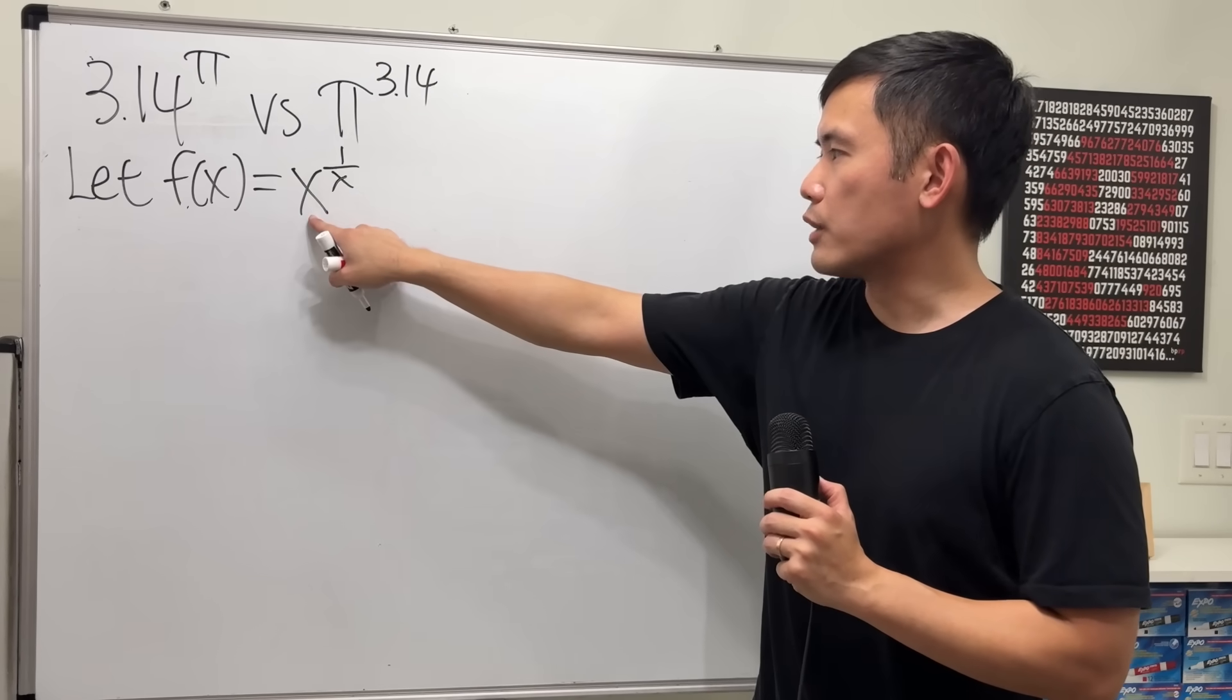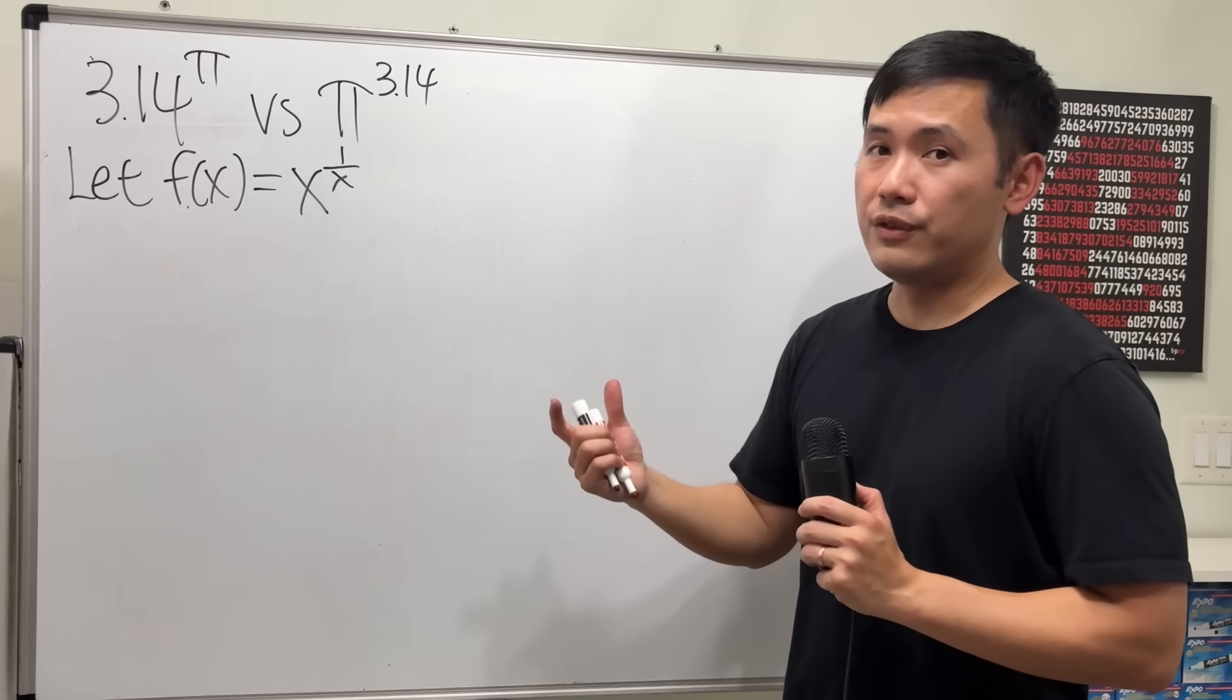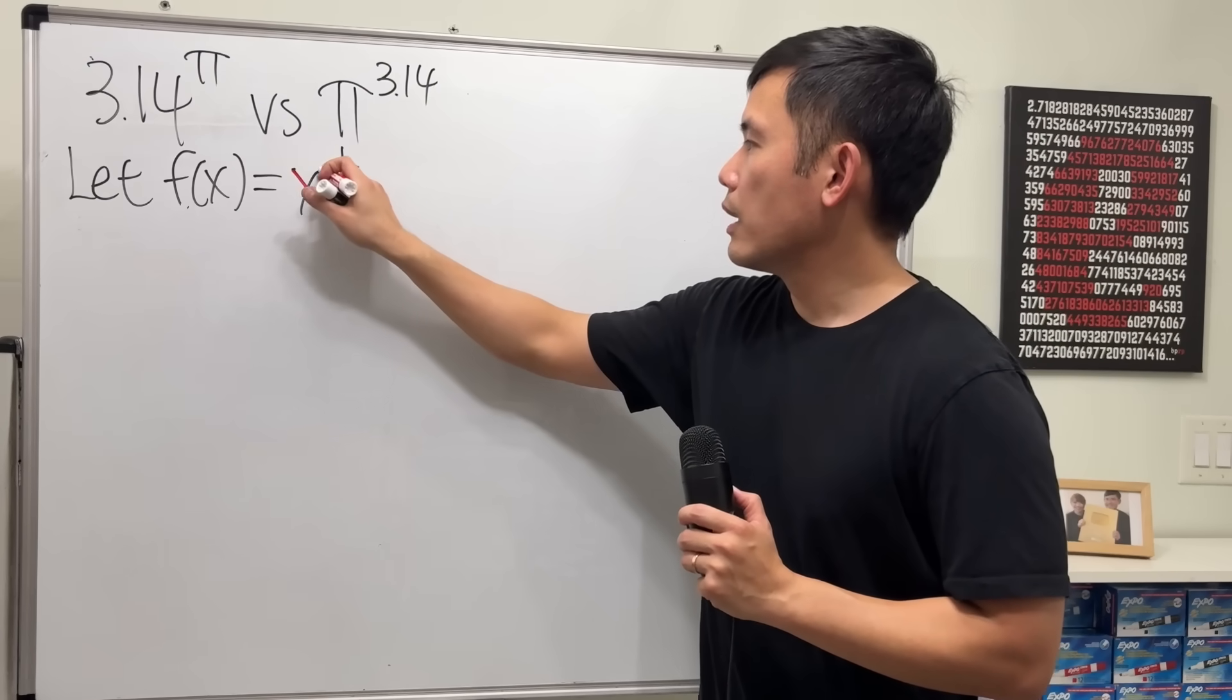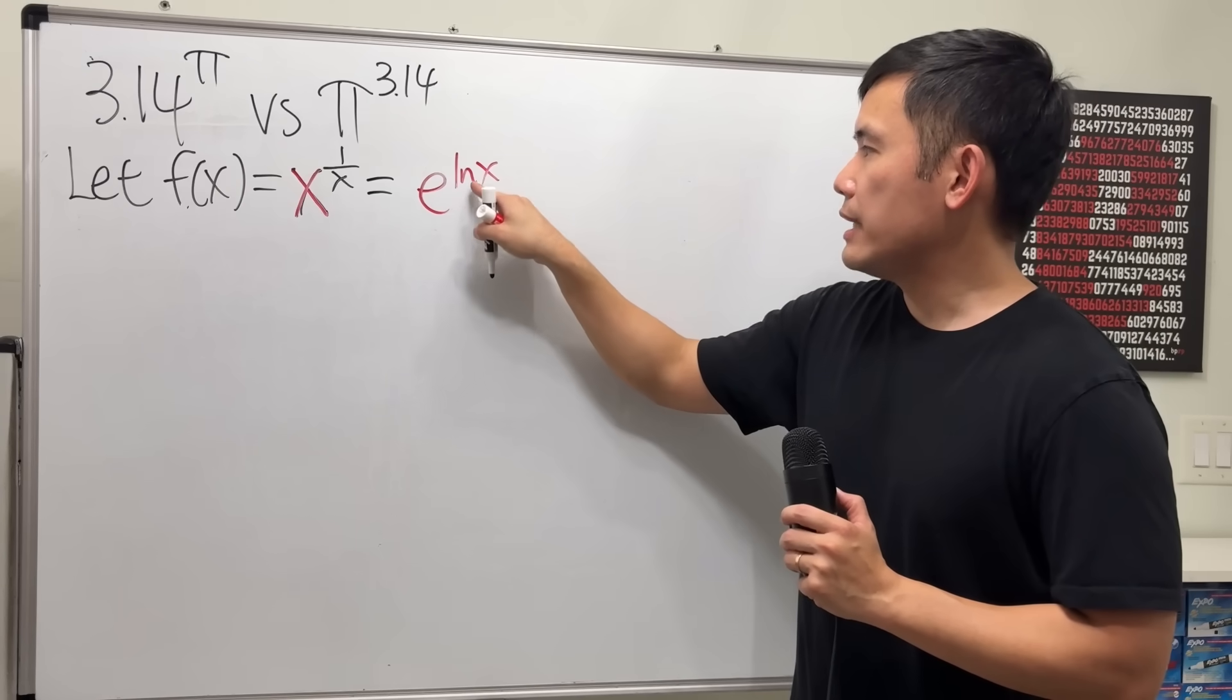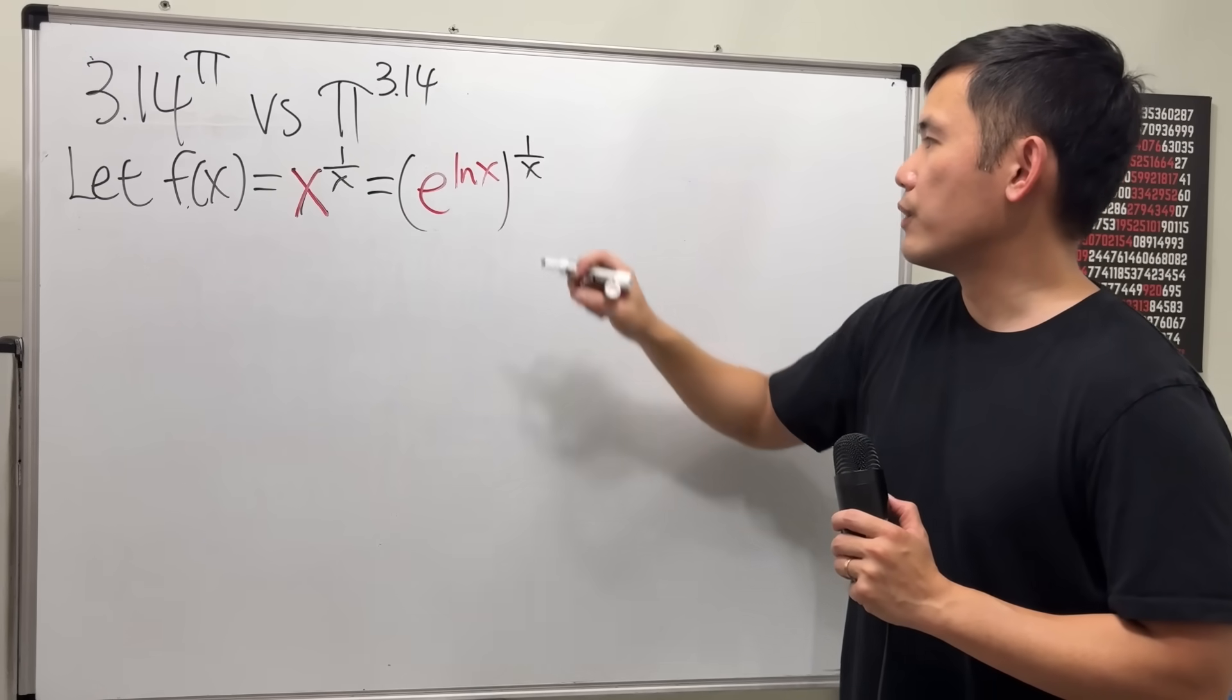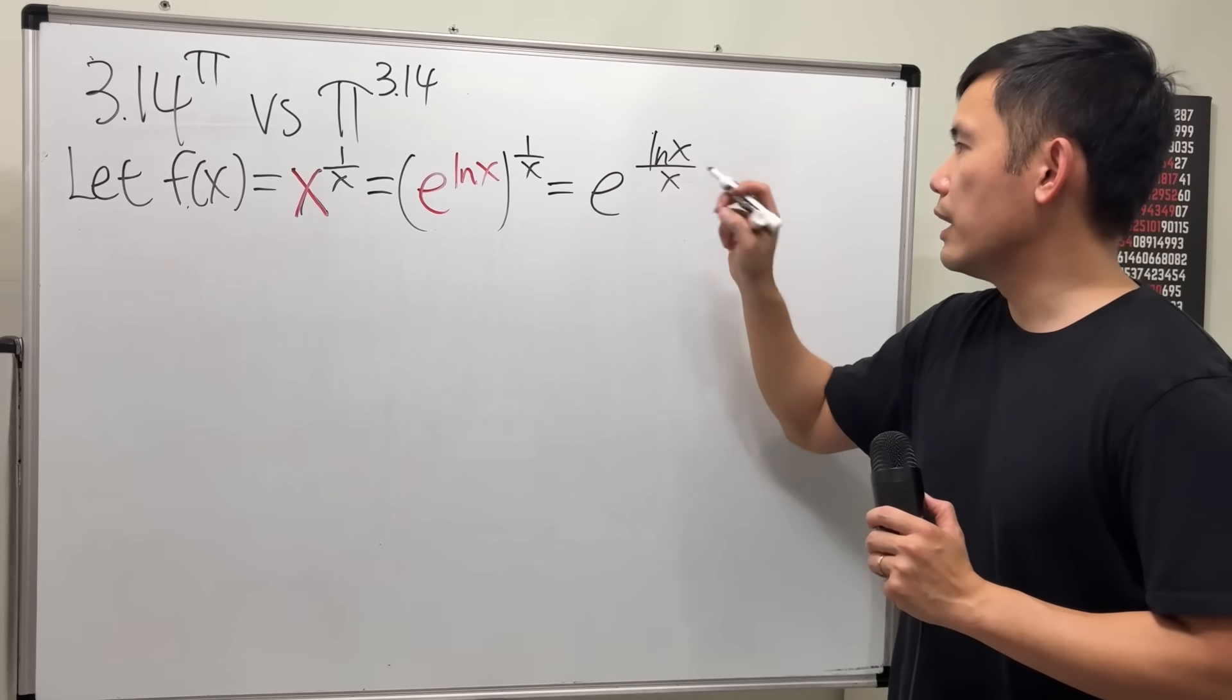But here we have a function to a function power. And especially, we do not like to differentiate when the base is a variable. We like to differentiate when the base is e. Therefore, I'm going to rewrite the x as e to the ln x power. e and ln cancel, so this is the same as just x. And then we have 1 over x. Now multiply the powers.